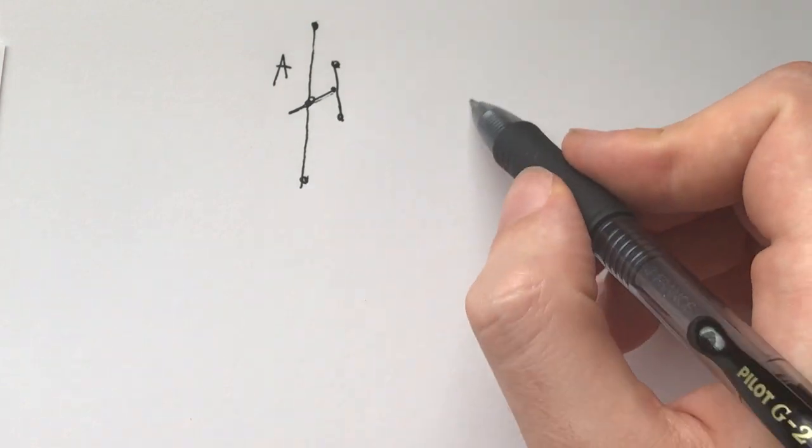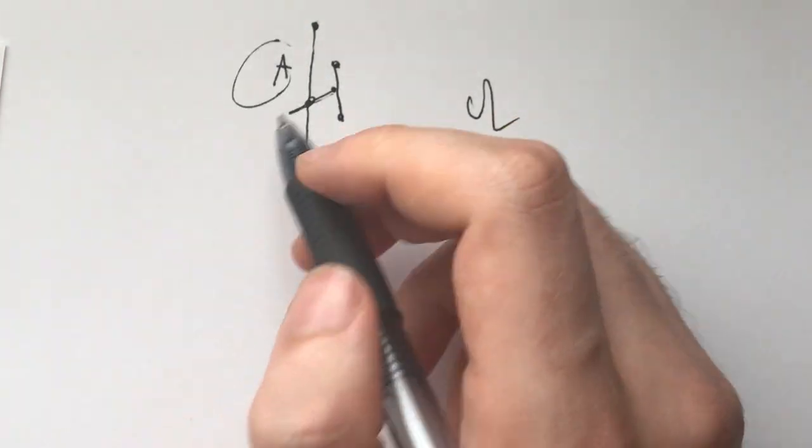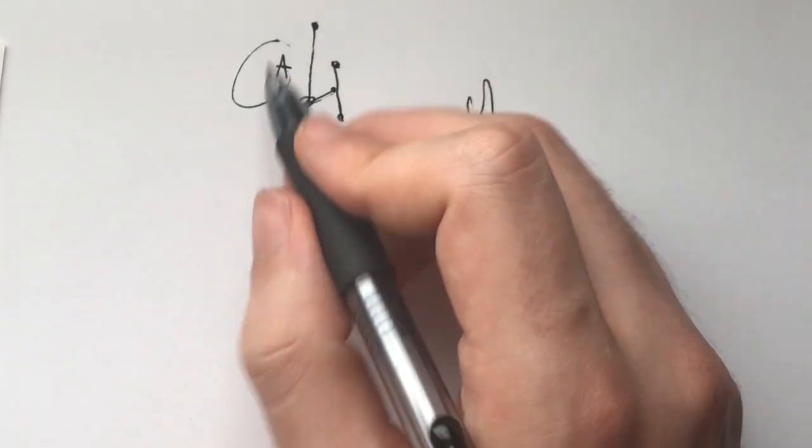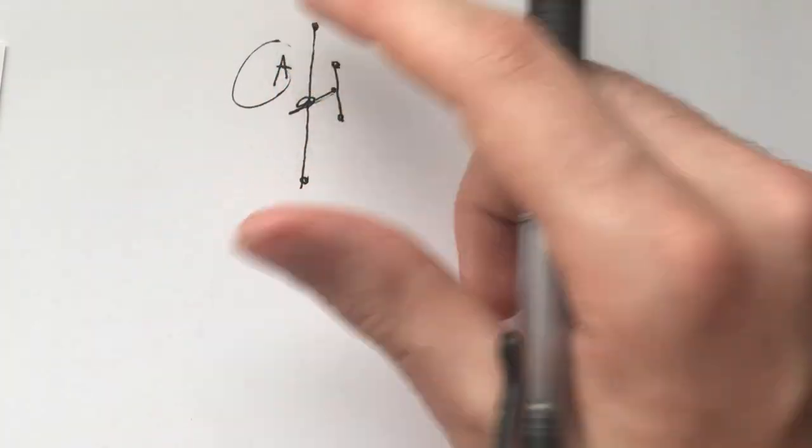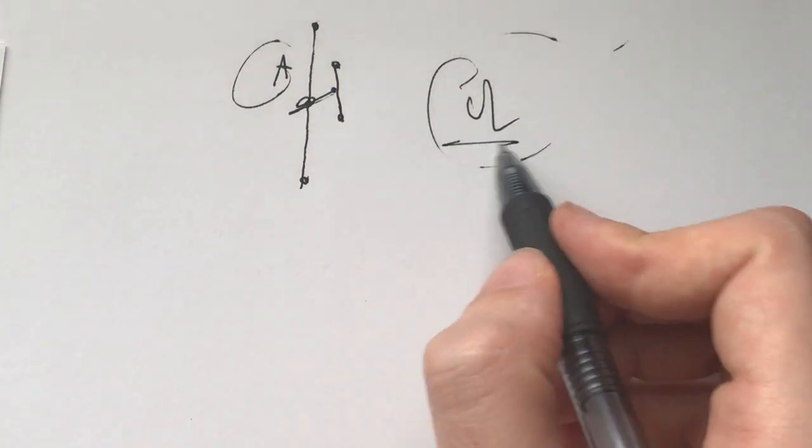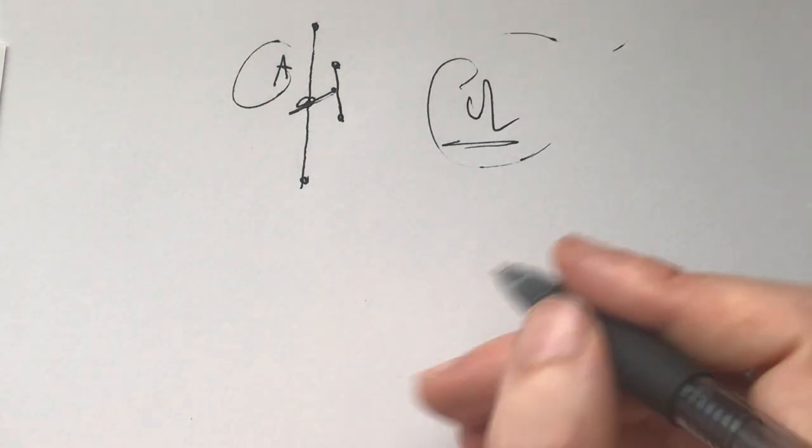This is what we have: a set Ω such that any point in the set is a midpoint of a line segment connecting two other points from the same set. Now we need to prove that this set is actually infinite.